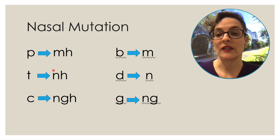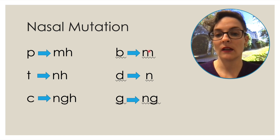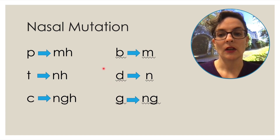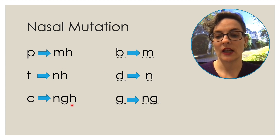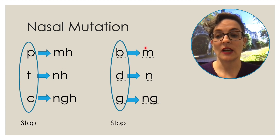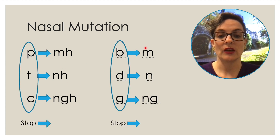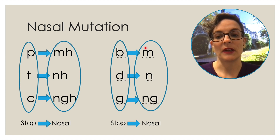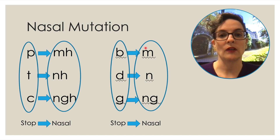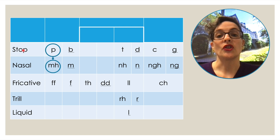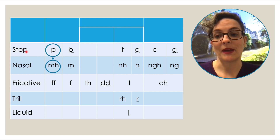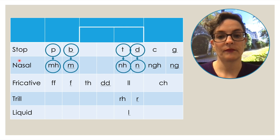We can also apply the how dimension to nasal mutation. Look at which sounds are involved: P, T, K, B, D, G. Which lines in the how dimension do they match up with? We're starting with stops and they are changing to nasals. So the same principle is happening — you're changing from stops to nasals, from one how category to another in a very systematic way.